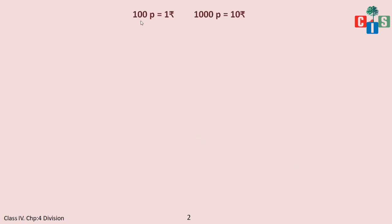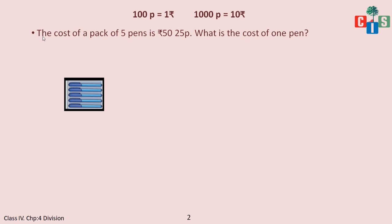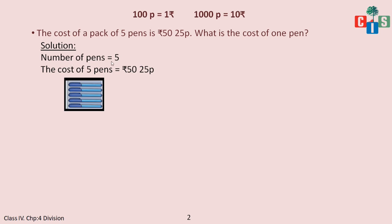Remember this — it's your thumb rule. Don't forget it. Now we will have word problems. The cost of a pack of five pens is rupees 50 and 25 paisa. What is the cost of one pen? It's a division sum. The number of pens is 5 and the cost of five pens together is 50 rupees and 25 paisa. Without any division I can say: 5 tens are 50, and five fives are 25, so my answer will be 10 rupees and 5 paisa.